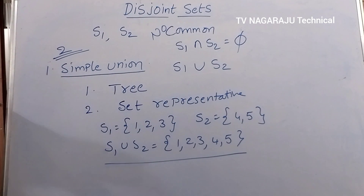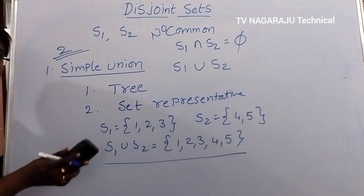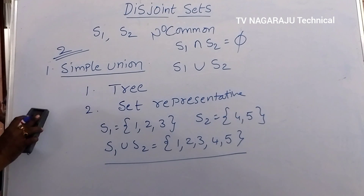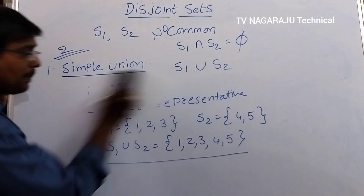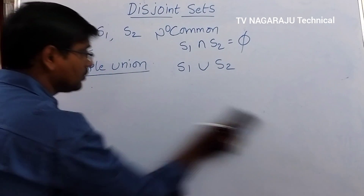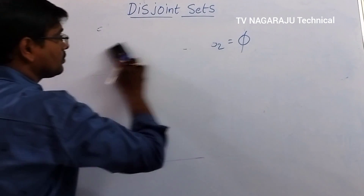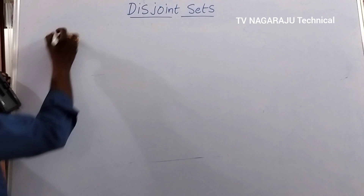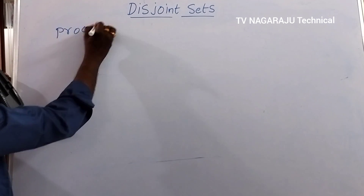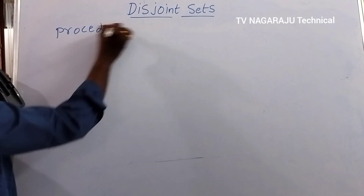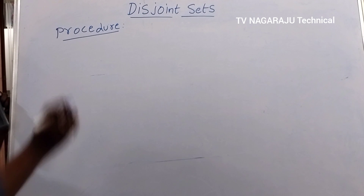We are using a tree structure and one element is considered as the set representative element. Now I will explain the procedure for how to perform the union operation.